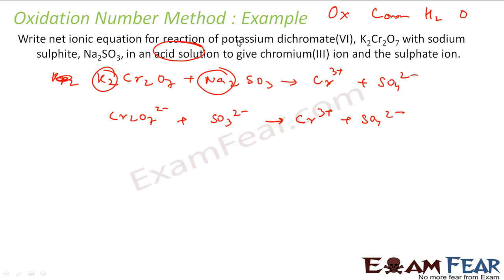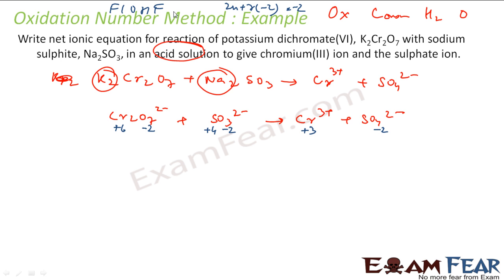The first step is to balance oxidation number, so let's write the oxidation numbers. For Cr₂O₇²⁻, oxygen is −2. Let Cr be X: 2X + 7×(−2) = −2, which gives 2X = 12, so X = +6. For SO₃²⁻, let S be X: X + 3×(−2) = −2, so X = +4. Cr product is +3. For SO₄²⁻, let S be X: X + 4×(−2) = −2, so X = +6. So these are my oxidation states.